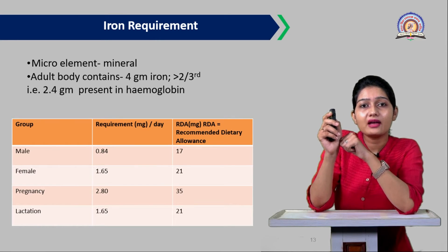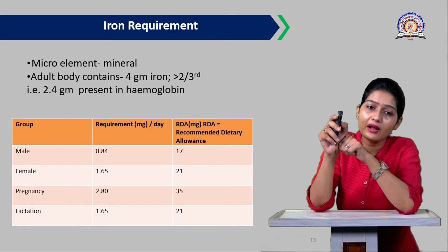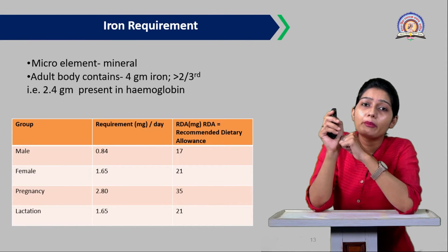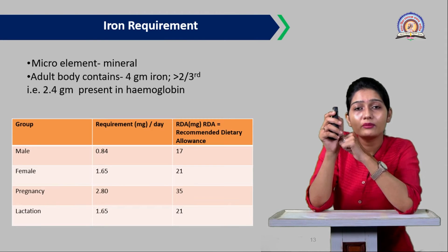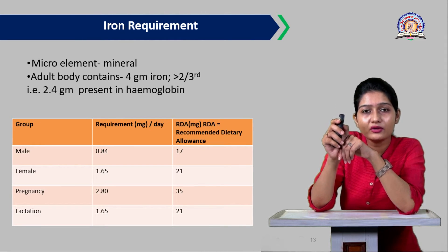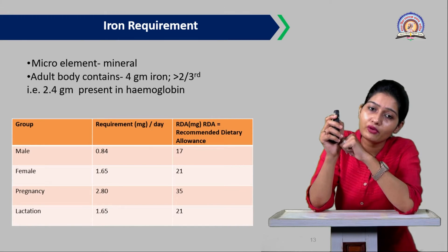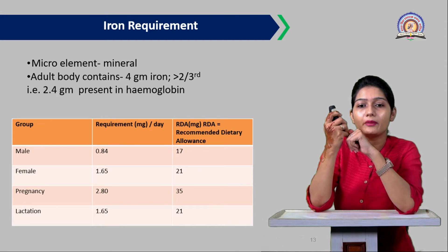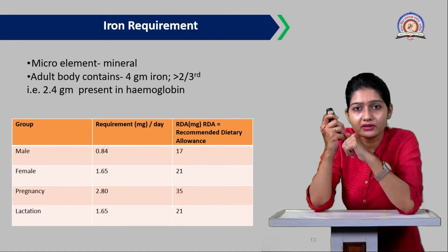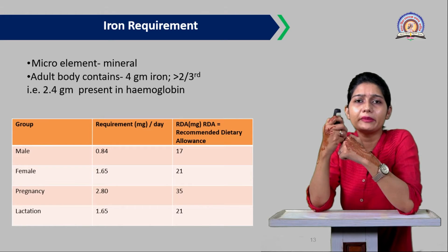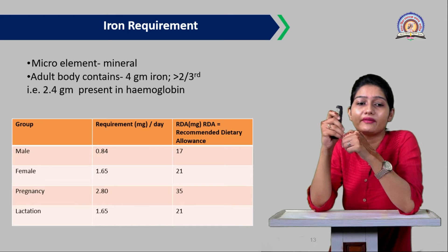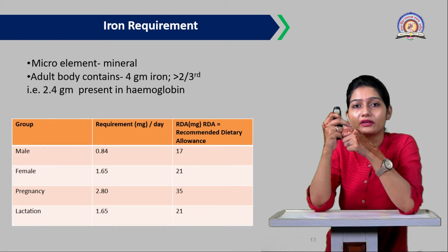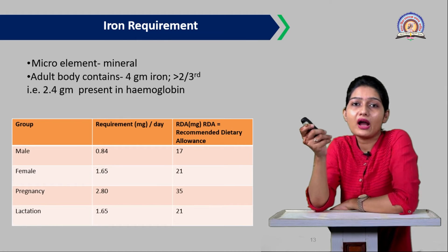Males require 0.84 milligrams of iron per day, females require 1.65 milligrams, pregnant women require 2.80 milligrams, and lactating mothers require 1.65 milligrams per day. The Recommended Dietary Allowance (RDA) from the Indian government is 17 mg for males, 21 mg for females, 35 mg for pregnant mothers, and 21 mg for lactating mothers. Students should remember these iron requirement values.